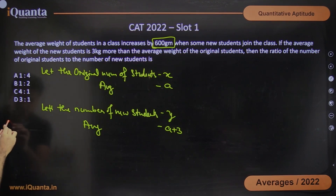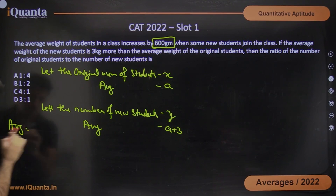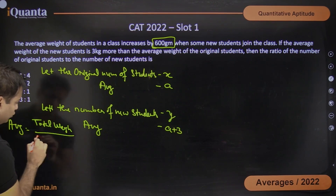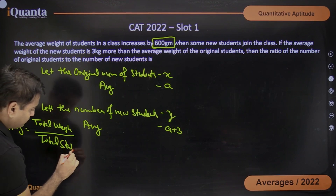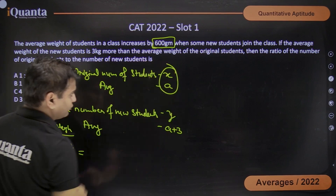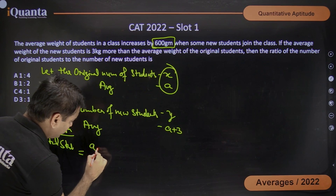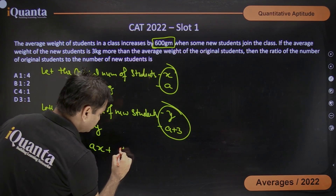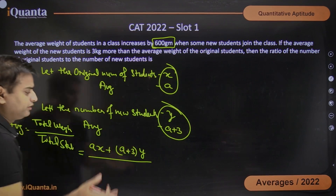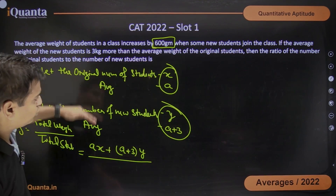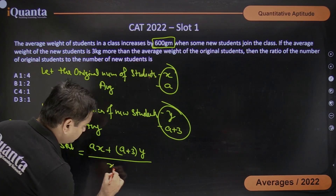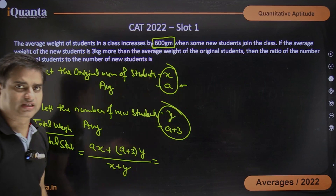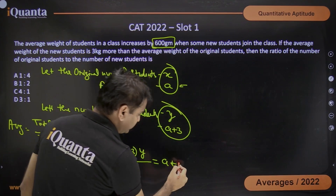When the new students joined the original students, the class average increased by 600 grams. We know the formula for average is total weight divided by total students. So the total weight is weight of original students, which is A times X, plus the weight of new students, which is (A + 3) times Y. The total number of students is X plus Y, and the new average is A plus 0.6.